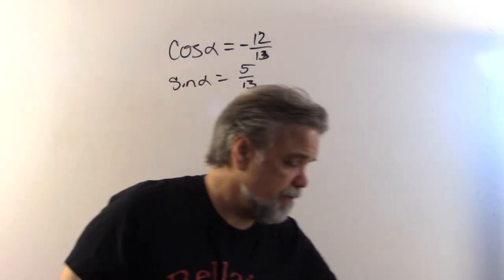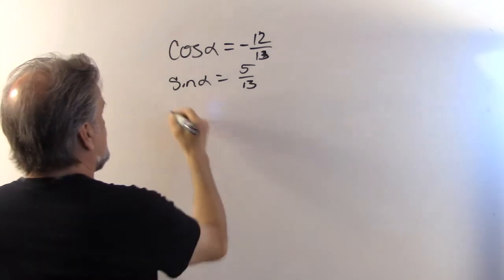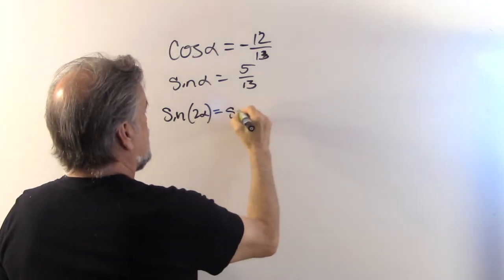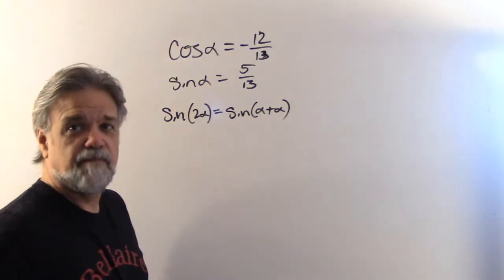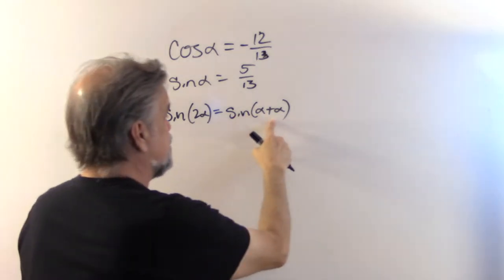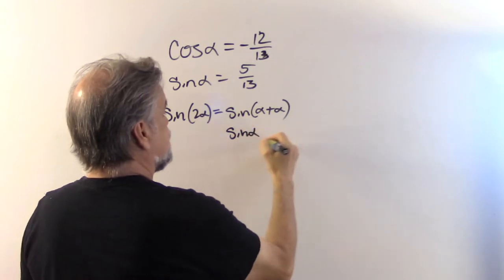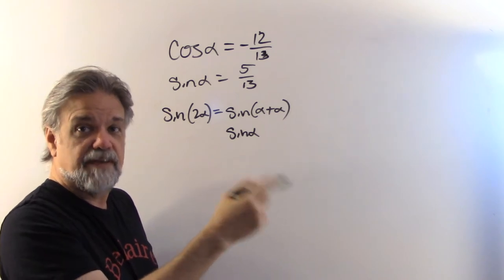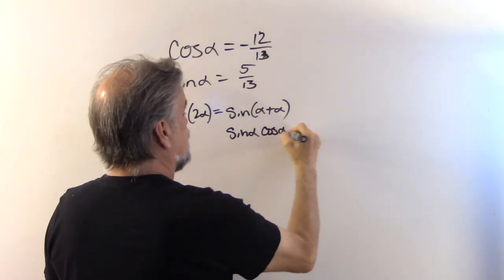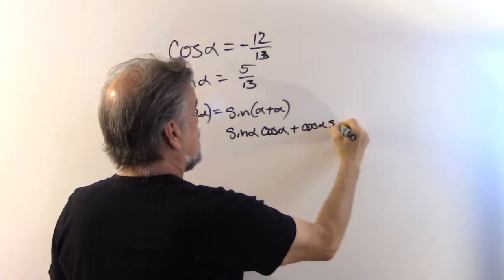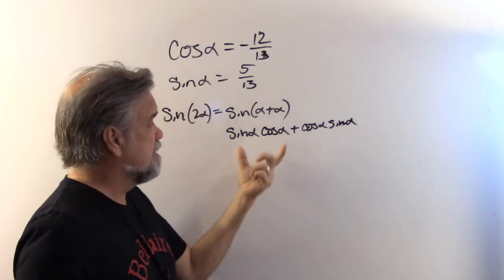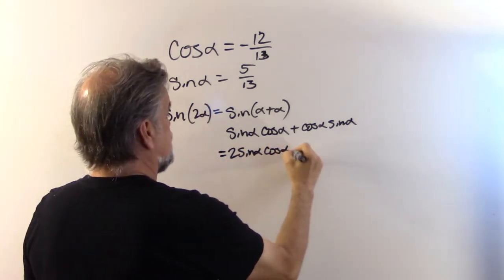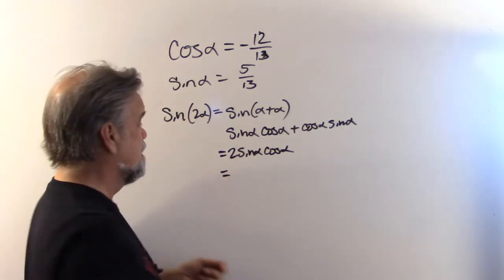If I wanted to find the sine of 2α, I'd say: the sine of 2α — I can think of 2α as α + α, and I have an identity for the sine of the sum of two angles. That's sine α times cosine β plus cosine α times sine β. This time β equals α, so it becomes sine α cosine α plus cosine α sine α. These two terms are the same, so this is just equal to 2 times sine α times cosine α.